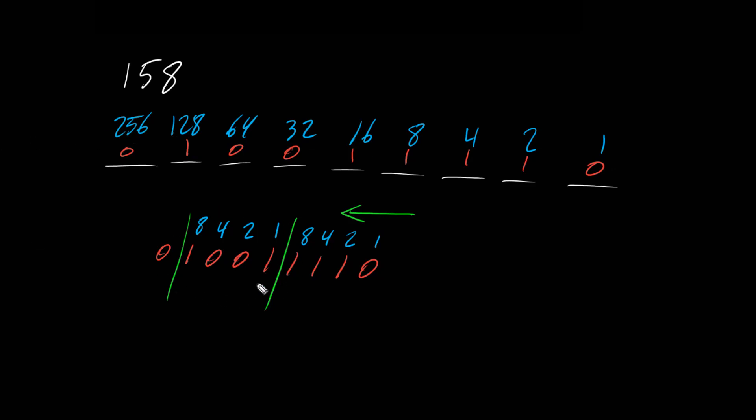Okay, now we can see in this group 8 plus 1, that's 9, because 8 is turned on and 1 is turned on. So that's 9. And here we have 8 turned on, 4 turned on, and 2 turned on. So 8 plus 4, that's 12, plus 2, that's 14.